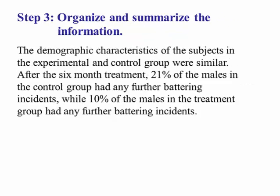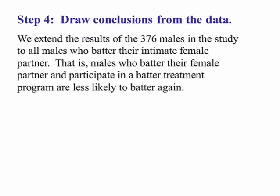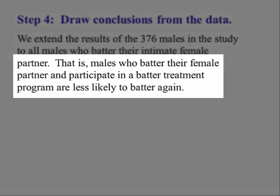Step three, organize and summarize the information. The demographic characteristics of the subjects in the experimental and control groups were similar. After six months, 21% of males in the control group had further battering incidences, while 10% of males in the treatment group had further battering incidences. Step four, we draw conclusions from the data. We extend the results from this sample to all males who batter their female partners — that is, males who batter their female partner and participate in the battery treatment program are less likely to do it again.